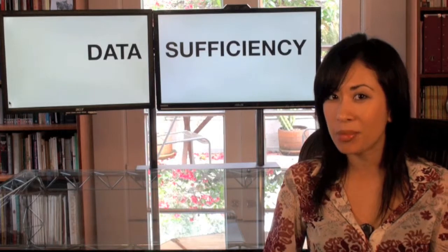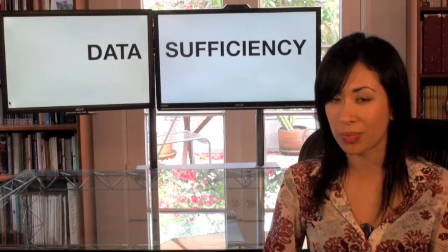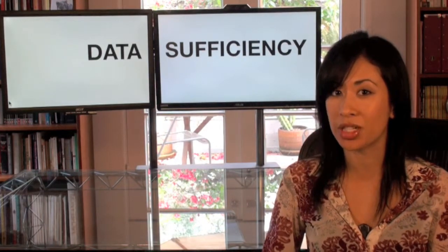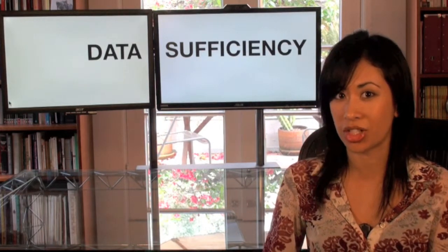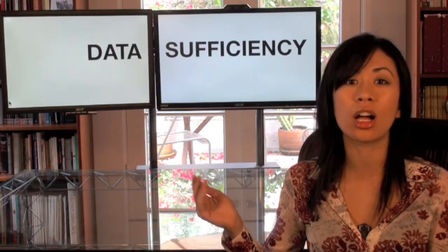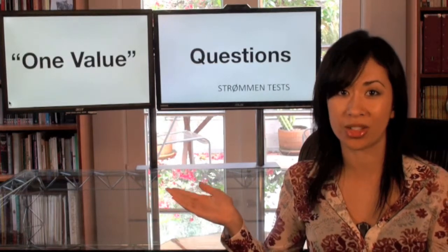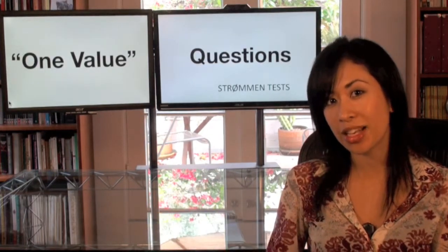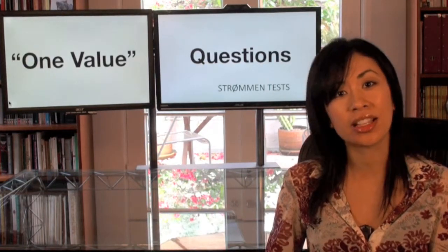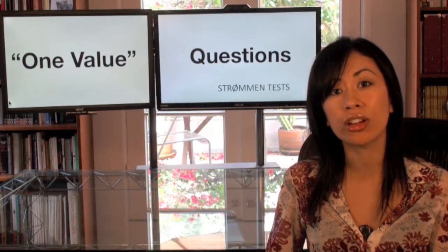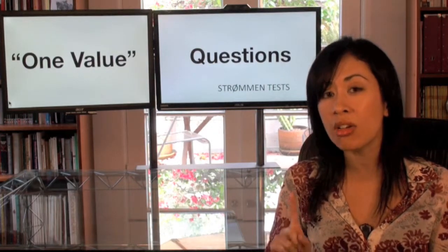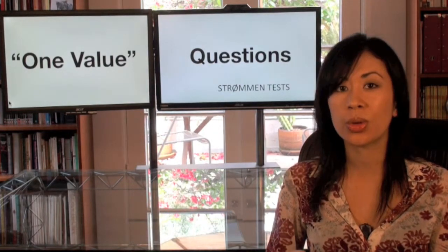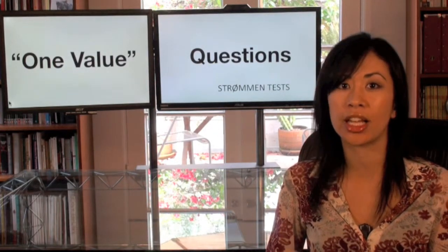The other thing that most people don't know is that there are only two types of questions on data sufficiency. The first is what we call a one-value question. As its name implies, this question is asking if you can figure out just one value for the answer.